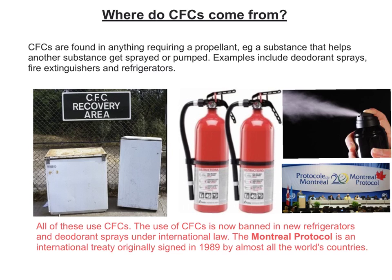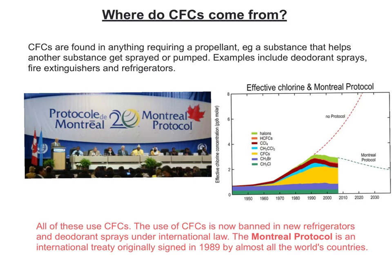Although the Montreal Protocol might not necessarily be part of your examination specification, it's worth having a quick think about it to see some context behind the chemistry of CFCs. Looking at the graph on the right-hand side of the screen, it's a projection of what would have happened without the Montreal Protocol — the red dotted line — versus the projected reduction in effective chlorine, meaning chlorine radicals in the stratosphere. These are projected to diminish rapidly from now through to 2030. The Montreal Protocol has been seen as one of the great success stories of international cooperation to improve the environment.